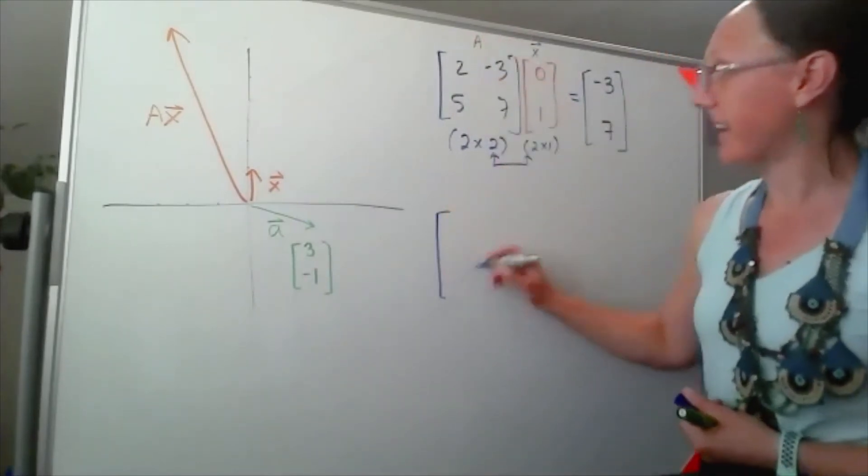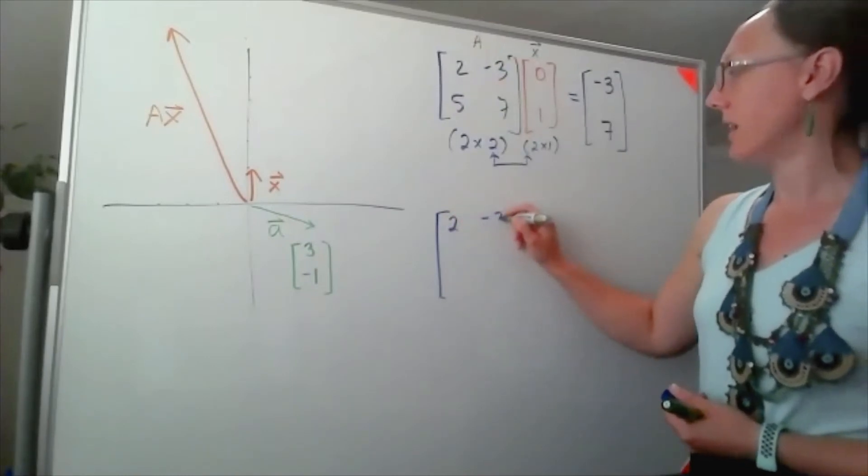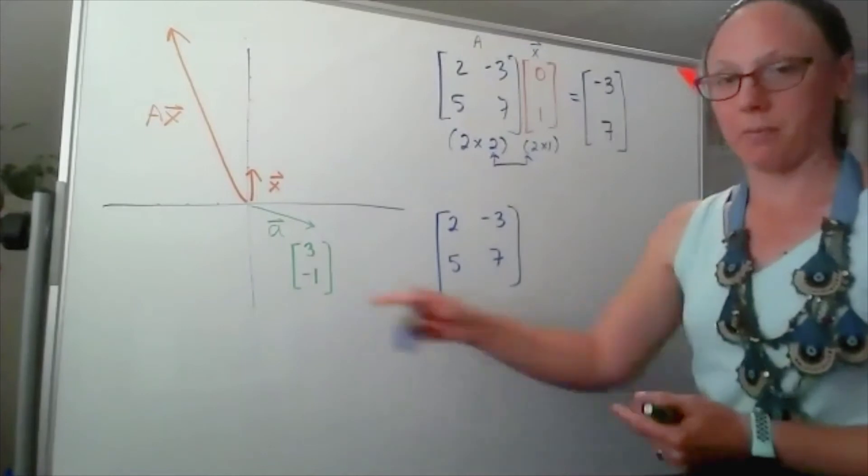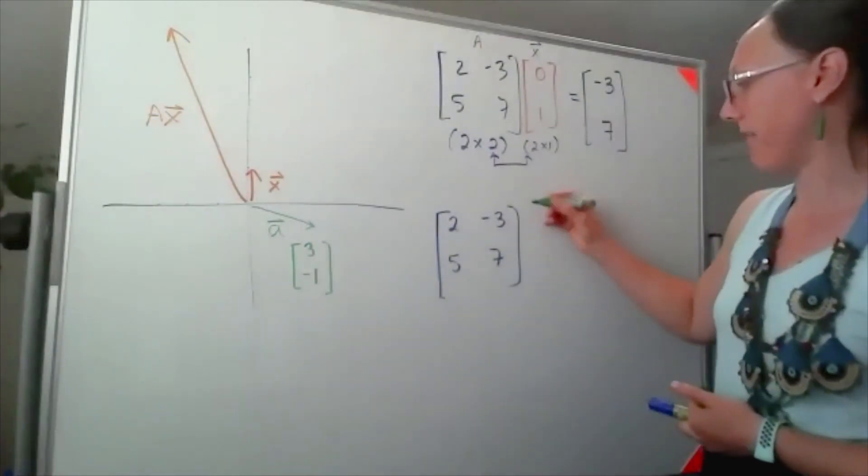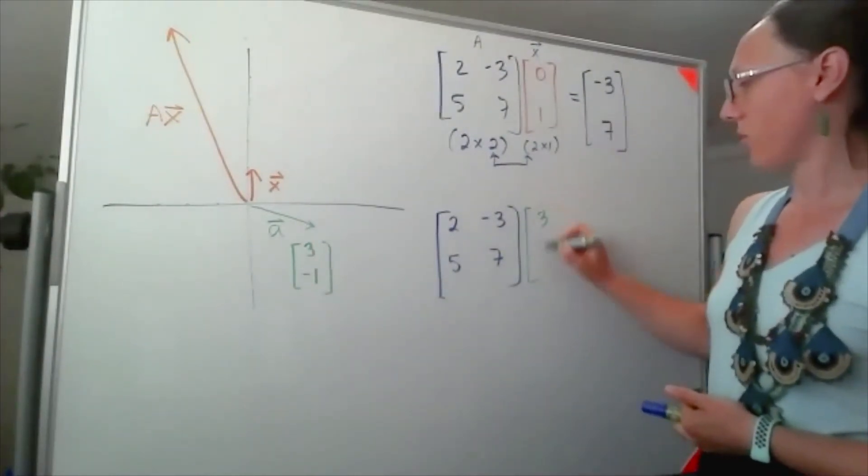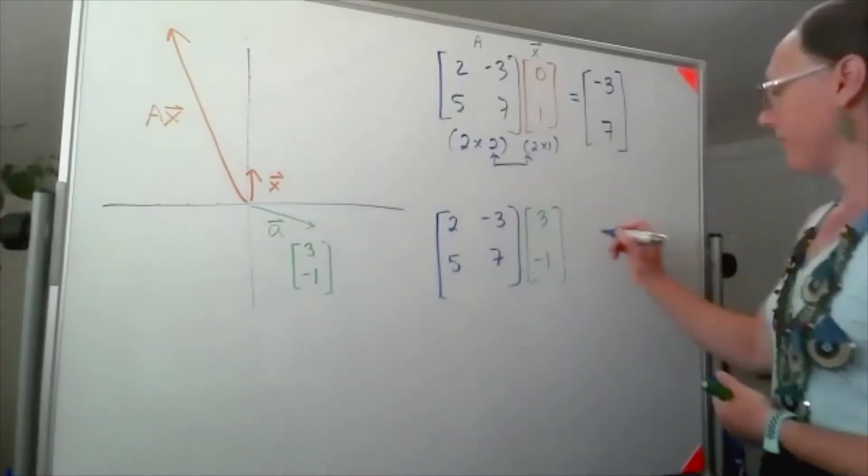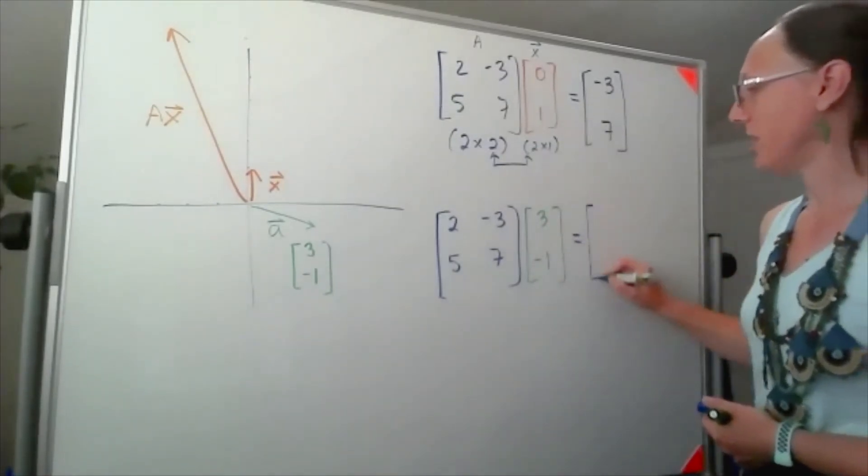I'm going to take my A matrix and multiply it now by my vector 3, negative 1. We already know the dimensions are going to work, so we'll go ahead and do that multiplication.